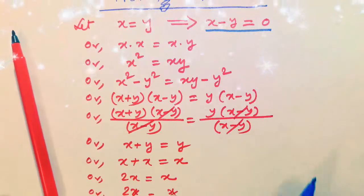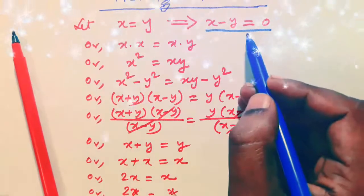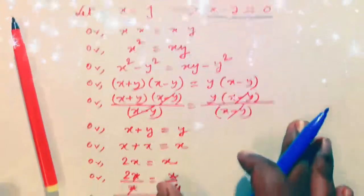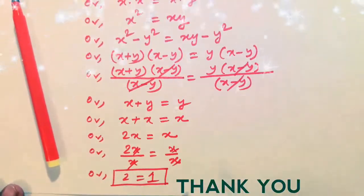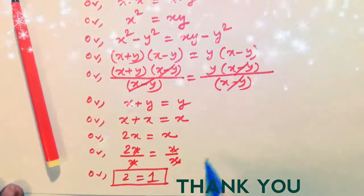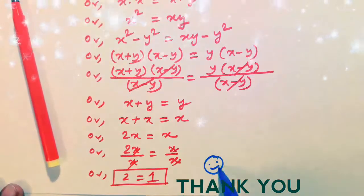So for this, we cannot divide by x minus y, that is by 0. So it is not possible in any way, 2 is equal to 1. Thank you.